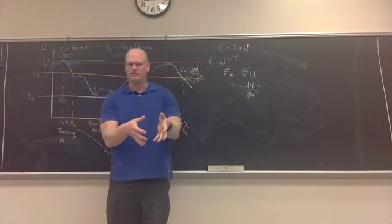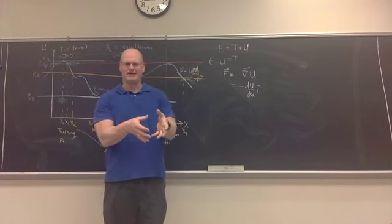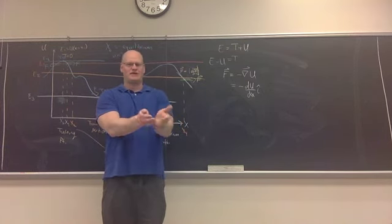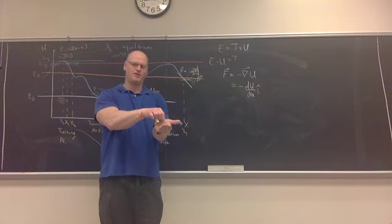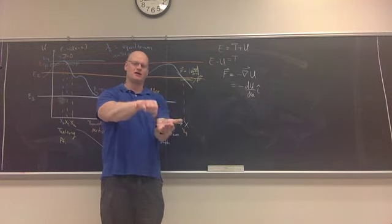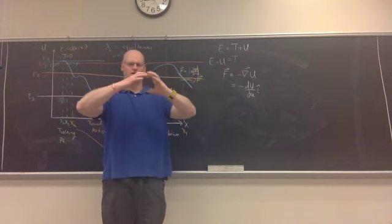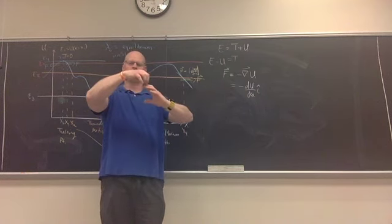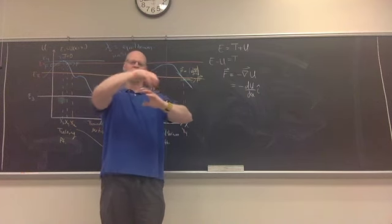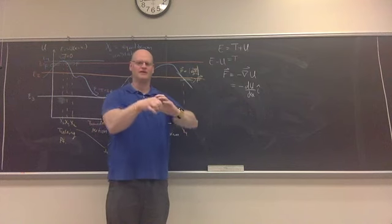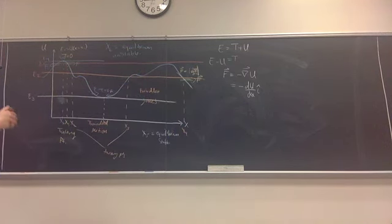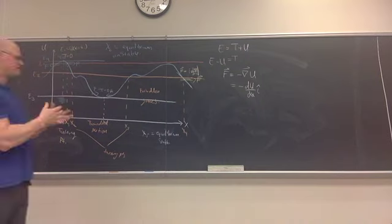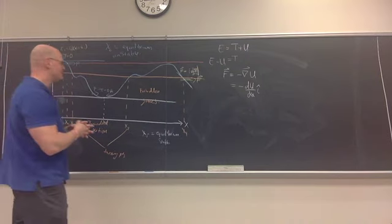Think of it like a bowl: for a stable equilibrium, the bowl faces up — put the particle on the bottom and move it, it harmonically oscillates back and forth. For an unstable equilibrium, flip the bowl over so it faces down — put the particle on top and it always rolls away from that equilibrium position, because there are no forces confining it or bringing it back.